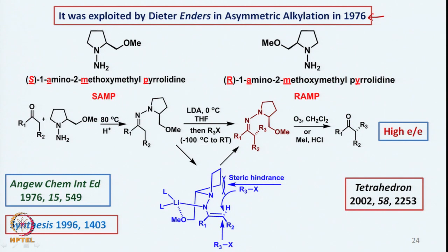This was exploited by Dieter Enders in asymmetric alkylation in 1976. Two very well-known chiral ligands, SAMP and RAMP, were prepared and used: S-1-amino-2-methoxymethylpyrrolidine (SAMP) and R-1-amino-2-methoxymethylpyrrolidine (RAMP). These are known as SAMP and RAMP hydrazines, introduced by Dieter Enders. They were once very popular and Dieter Enders and others continue to make use of them in many reactions.